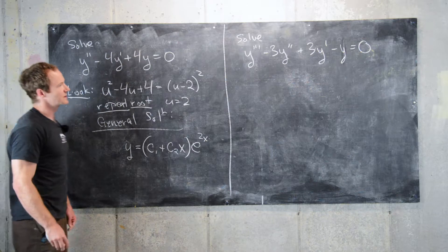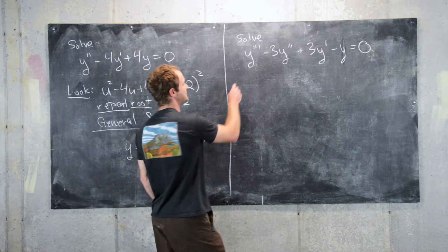So now let's look at this next one. So again, we want to look at the companion polynomial. So we have,